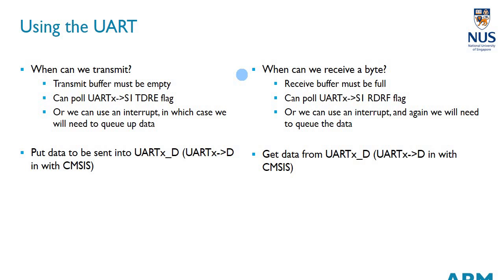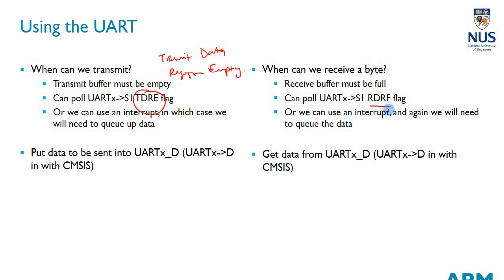To transmit data, the transmit data register must be empty — indicated by the TDRE (Transmit Data Register Empty) flag being set. Once empty, you can write data to it and it will begin shifting out. To know when data has been received, the RDRF (Receive Data Register Full) flag is checked — when set, it means 8 bits have been shifted in and the data can be read. In the polling approach, you check these two flags to know when you can transmit or receive.